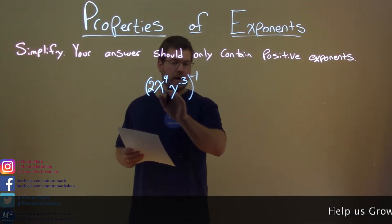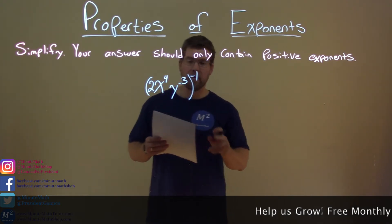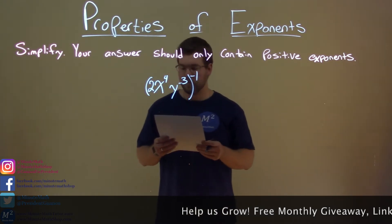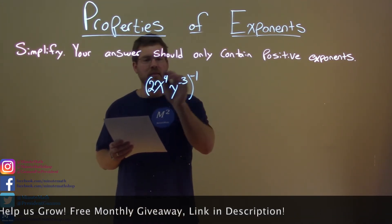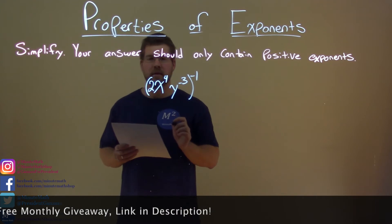2x to the 4th power, y to the negative 3rd power, all of that to the negative 1st power. So what I'm going to do here is I'm going to distribute this negative 1 power to all three parts.